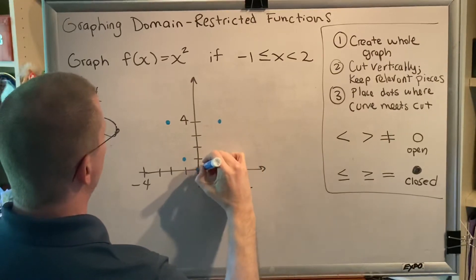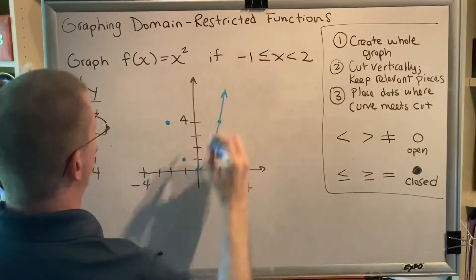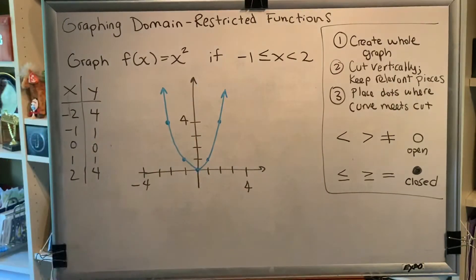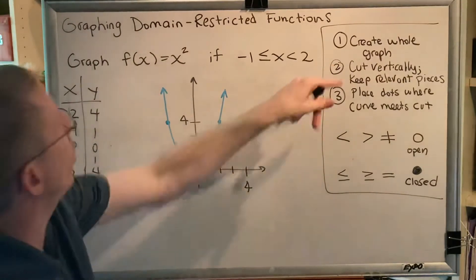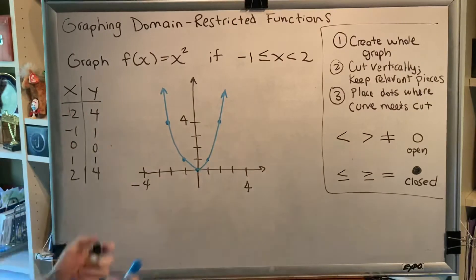You need to practice creating the functions in the library of functions so that you can create this graph in approximately 2 minutes. Okay, great. So that was step 1. Create the whole graph. F of x equals x squared looks like this.